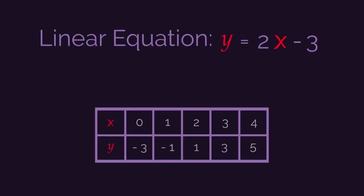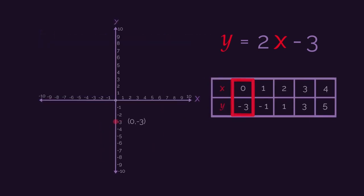So we now have five sets of coordinates, which we can just plot onto our graph. 0, negative 3, 1, negative 1, 2, 1, 3, 3, and 4, 5.